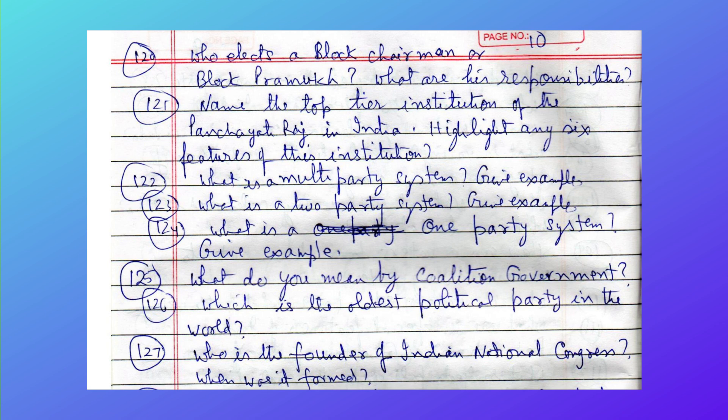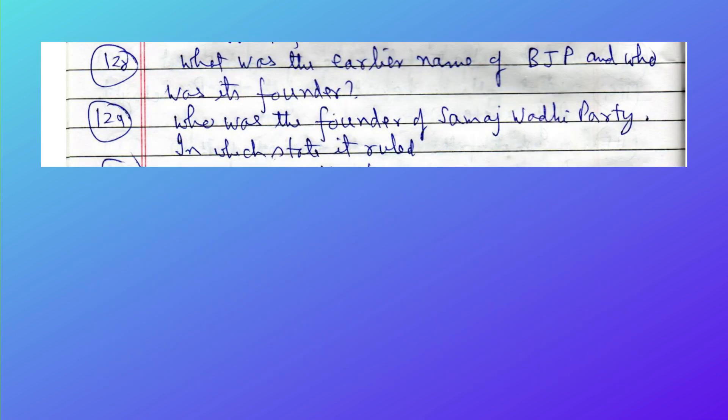What is the multi-party system — give examples. What is the two-party system — give examples. What is the one-party system — give an example. What do you mean by a coalition government? Which is the oldest political party in the world? Who is the founder of the Indian National Congress and when was it formed? What was the earlier name of the BJP and who was its founder?